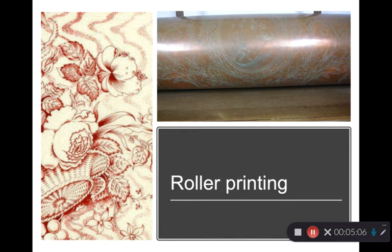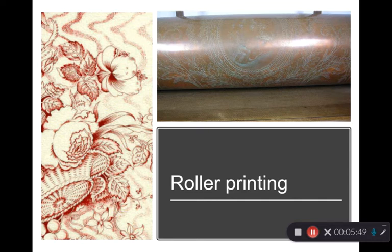Roller printing was developed in 1783, around the time textile operations were becoming more mechanized. Engraved rollers apply color directly to the fabric — ink adheres to the higher points of the engraved roller and prints onto the fabric. Each color requires a separate roller, so two colors is typically the fastest and most economical option. Rollers last a long time and move quickly through textiles, but preparing rollers and purchasing equipment is expensive. Much roller printing has since been replaced by screen printing.